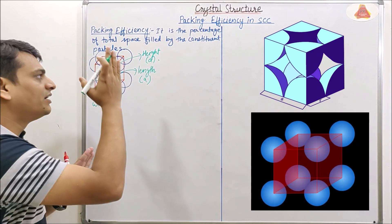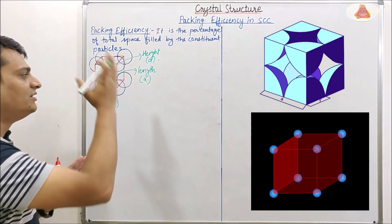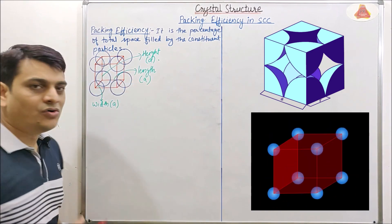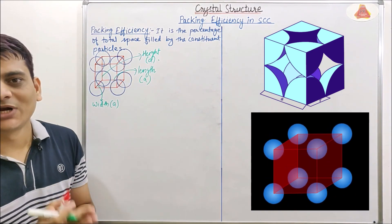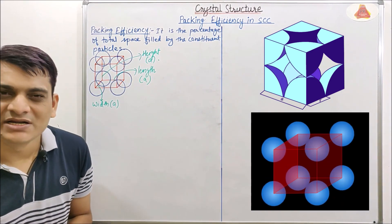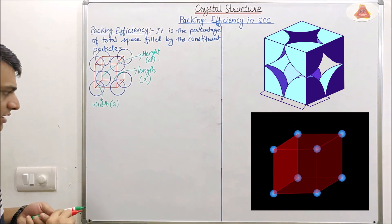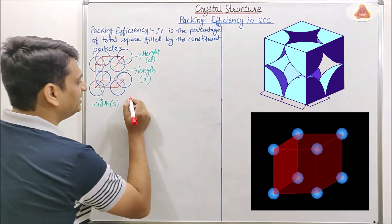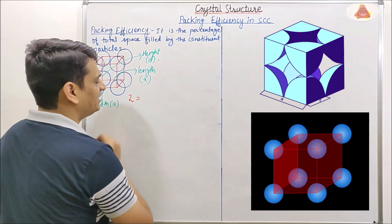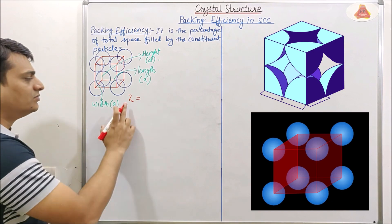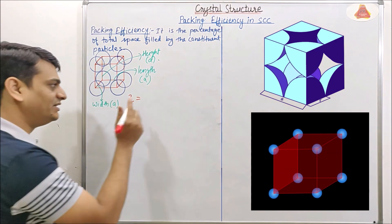So width, length and height are all equal to A. Now, if you want to calculate the number of constituent particles for SCC, it is denoted by Z. And Z is equal to the number of constituent particles present in the unit cell.